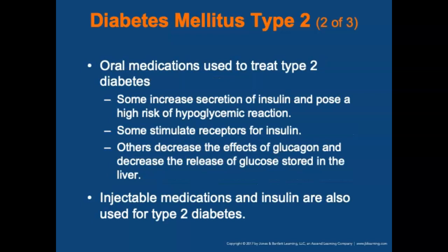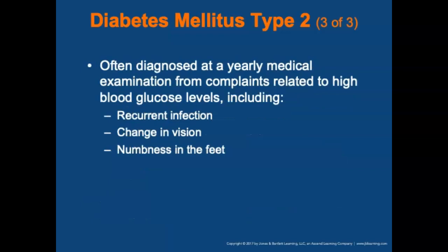Oral medications used to treat type 2 diabetes include agents that increase secretion of insulin — posing a high risk of hypoglycemic reaction — as well as medications that stimulate insulin receptors, decrease the effect of glucagon, and decrease the release of glucose stored in the liver. Injectable medications and insulin are also used for type 2 diabetes. Type 2 is often diagnosed at a yearly medical exam from complaints related to high blood sugar levels, including recurrent infections, changes in vision, and numbness in the feet.